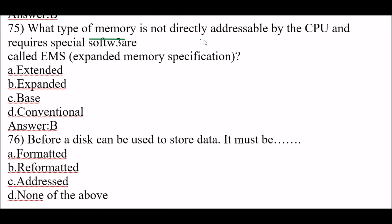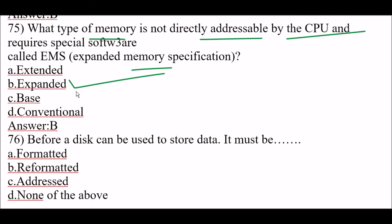Next question: what type of memory is not directly addressable by the CPU and requires special software? It is called EMS — expanded memory specification. The right answer is option B, expanded. Expanded type of memory is not directly addressable by the CPU and requires special software called EMS.